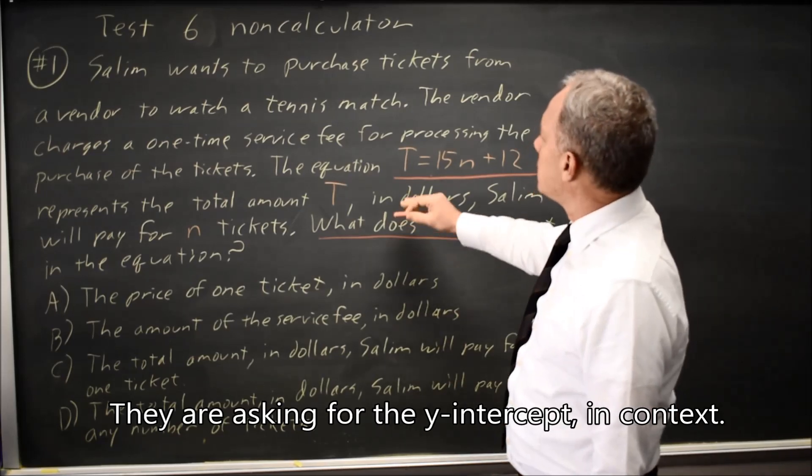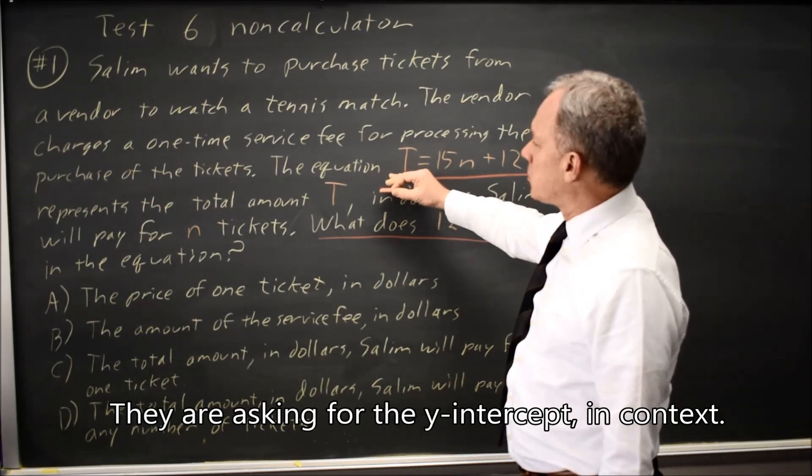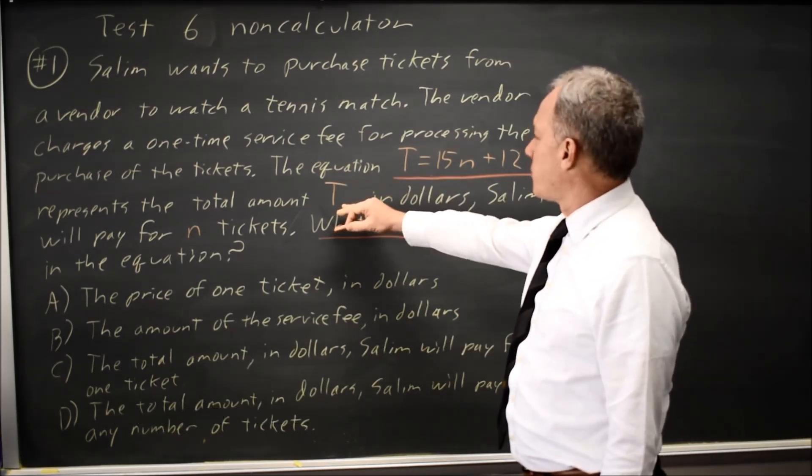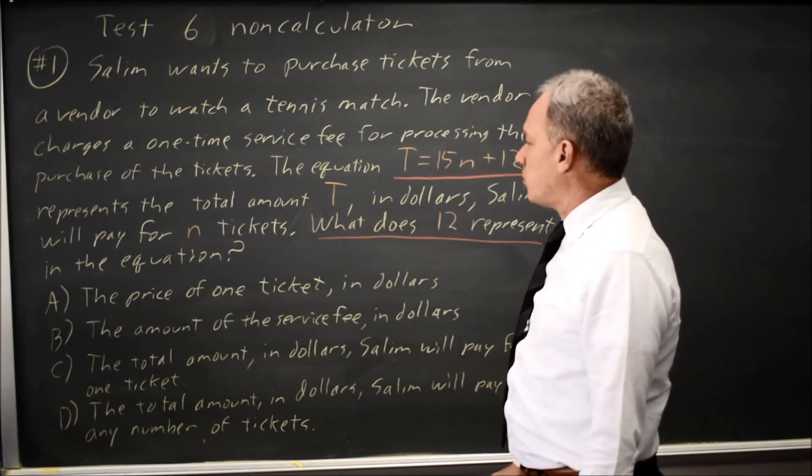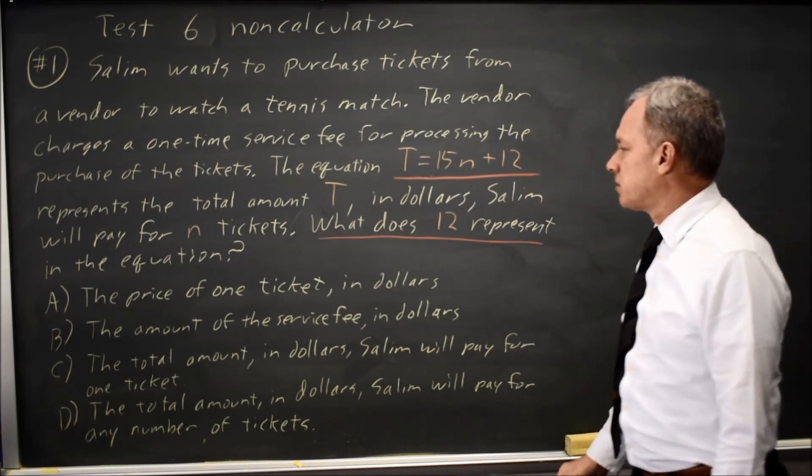In this context, T is the total price, total amount paid in dollars for N tickets. N is the number of tickets, and they're asking what does the 12 represent? What does the intercept represent?